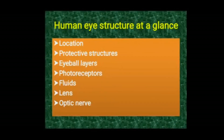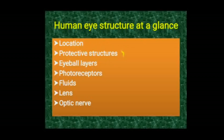Let's check out the structure of the human eye. Under this topic we are going to discuss the following points: location, protective structures, different layers in the eyeball, what are photoreceptors, various fluids in our eye, the peculiarity of our lens, and finally the optic nerve. These are the major points we are going to discuss under the heading 'structure of the eye.'